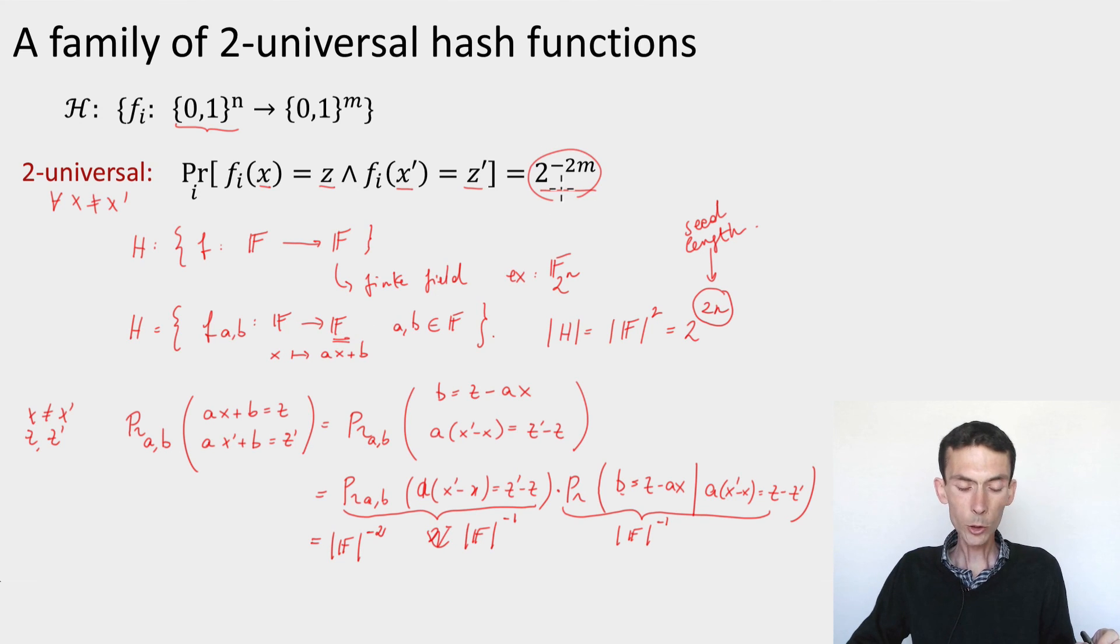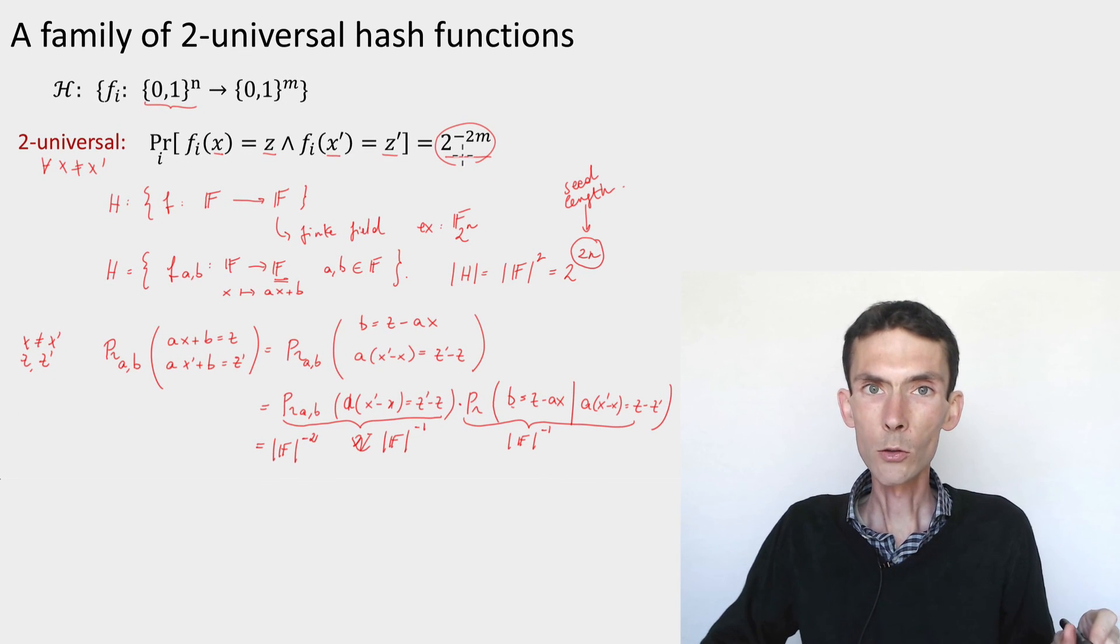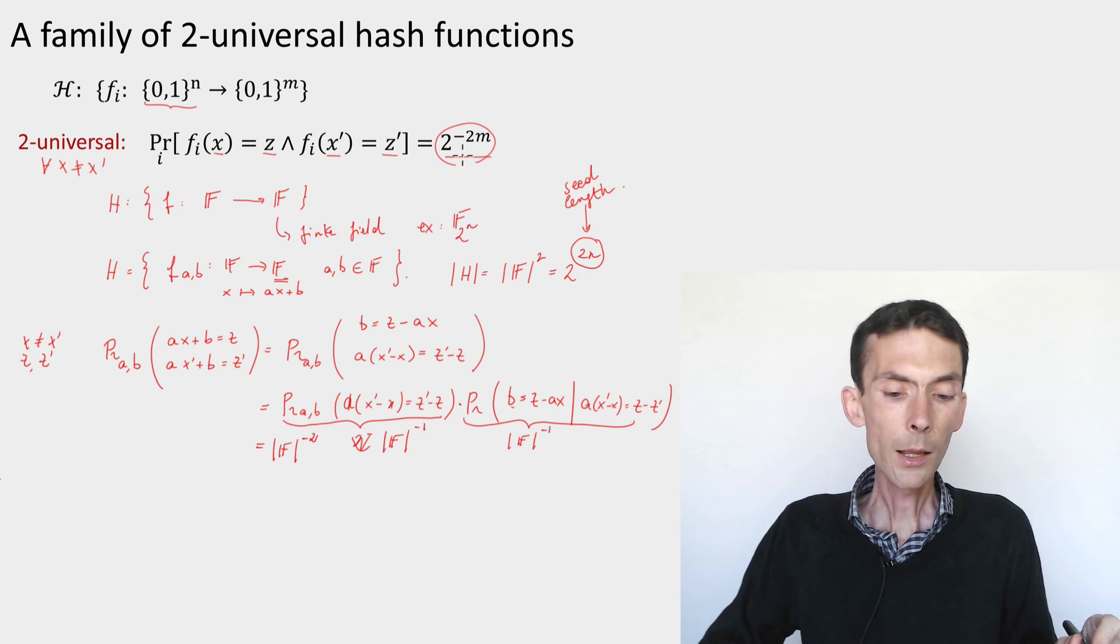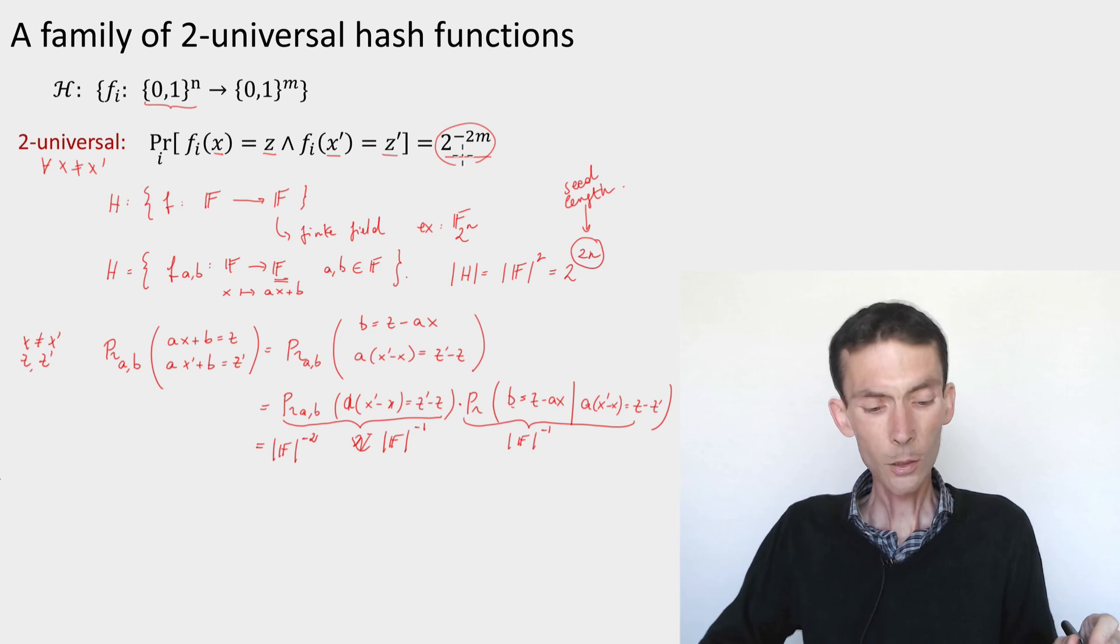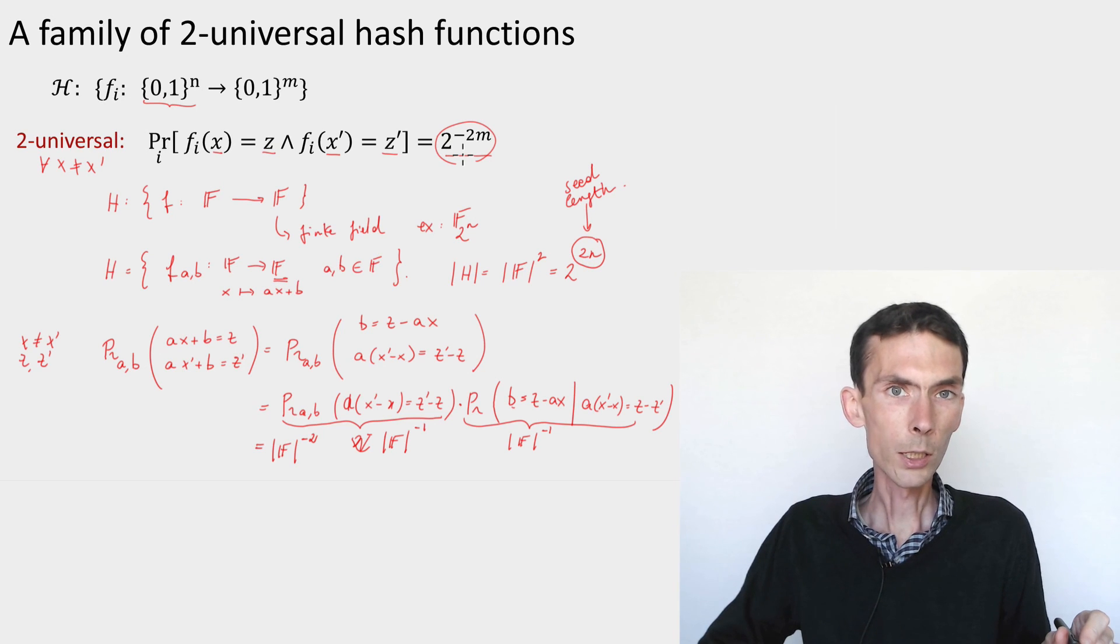So this is a simple check that we have a family of two universal hash functions. And so, combined with what we saw in the previous module, this gives us a complete construction of a strong seeded extractor in the case of no side information. And the goal of the next few modules is to build up on the proof that we have seen so far in order to show that the same family of hash functions also gives us a strong seeded extractor in the case where there is quantum side information.